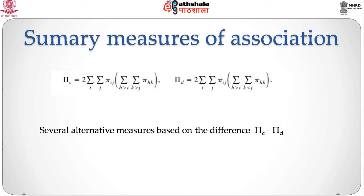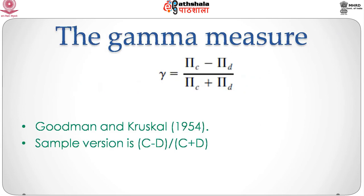We can derive the corresponding population measures of the probability of concordance and the probability of discordance. The probability of concordance, pi_c, is given by 2 times the summation over i and j of pi_ij multiplied by the summation over k greater than i and l greater than j of pi_hk. The probability of discordance, pi_d, is defined analogously. Most measures of association will depend on the difference pi_c minus pi_d.